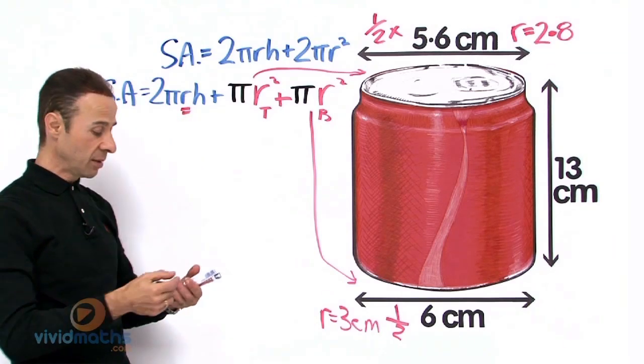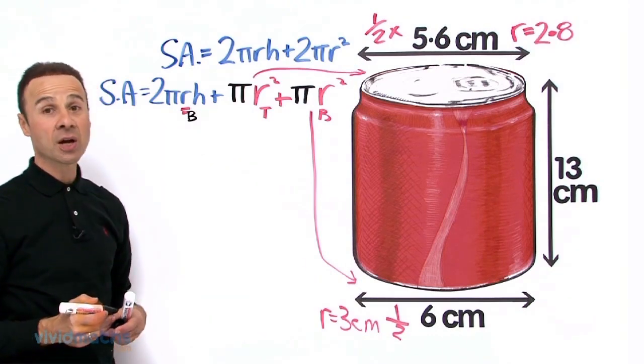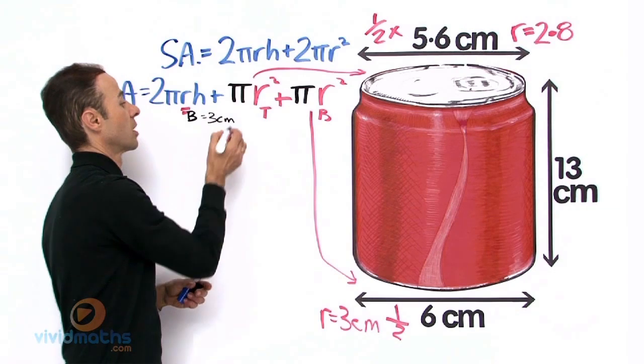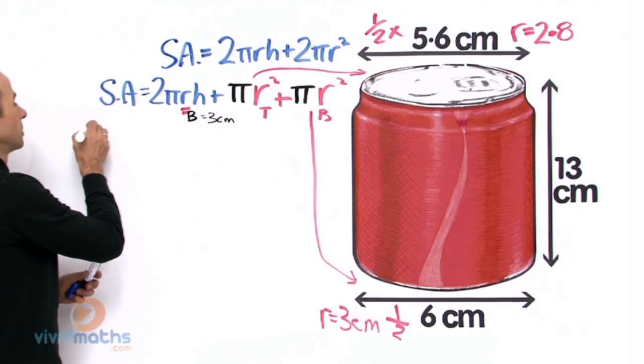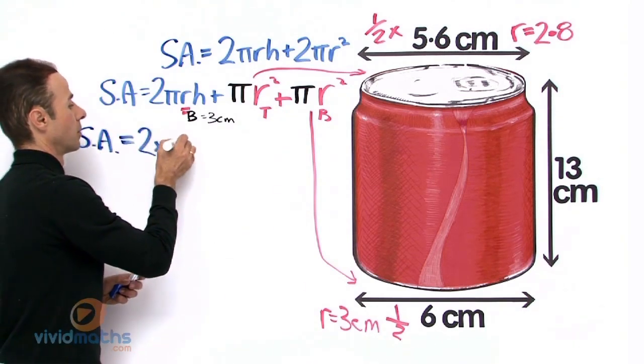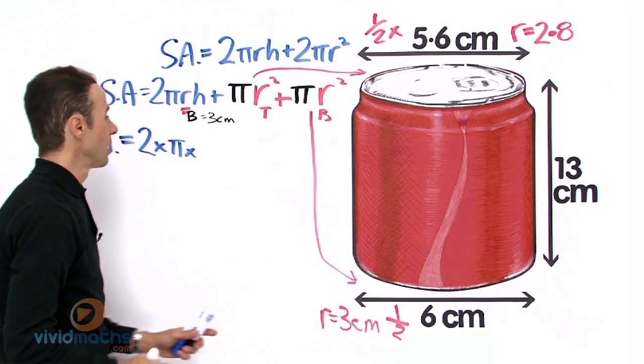That is why we use here the bottom radius, so let me put B for bottom there. So that is going to be 3cm. Let us start to substitute the values in there, and here is the radius again for the bottom.